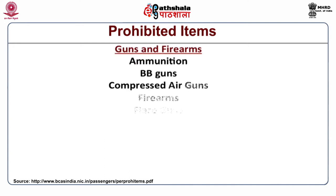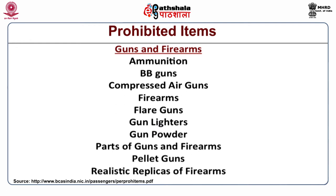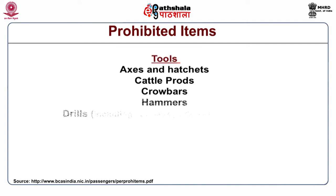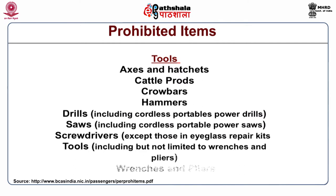In the category of guns or firearms: ammunition, BB guns, compressed air guns, firearms, flare guns, gun lighters, gun powders, parts of guns and firearms, pellet guns, realistic replicas of firearms and pistols are prohibited. In the category of tools: axes and hatches, cattle prods, crowbars, hammers, drills including cordless portable power drills, saws including cordless portable power saws, screwdrivers except those in eyeglass repair kits, and tools including wrenches and pliers are prohibited.